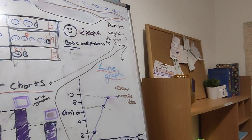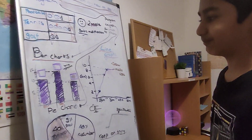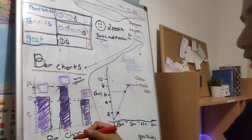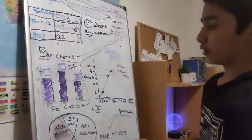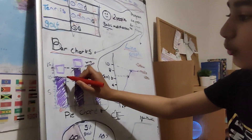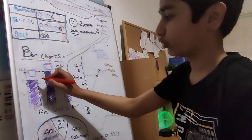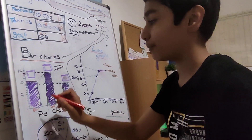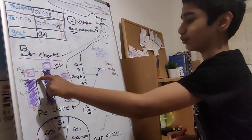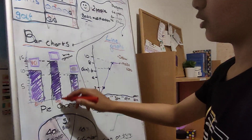Next we move on to bar charts. The reason it's called bar charts is because there are bars in the chart. Here we have a survey about pets. For cats, we look at the top of the bar — as you can see it lines up with 10, so we know 10 people like cats and own a cat.